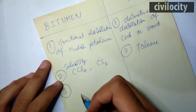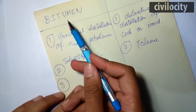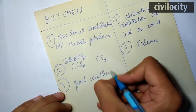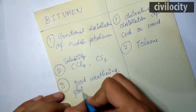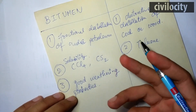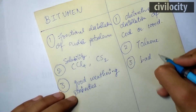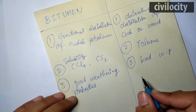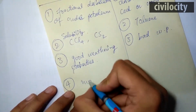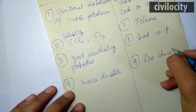Our third point is weathering properties. Bitumen possesses very good weathering properties. Environmental factors like heavy rainfall, very low and very high temperatures, and heavy snowfall do not change the properties of bitumen. Tars, however, do not possess good weathering properties — they have bad weathering properties. Since bitumen possesses good weathering properties, it is more durable, whereas tars are less durable.